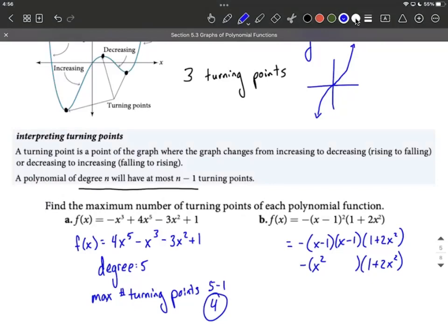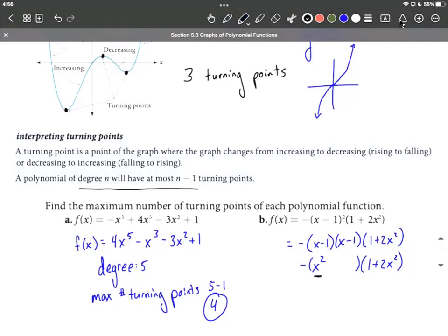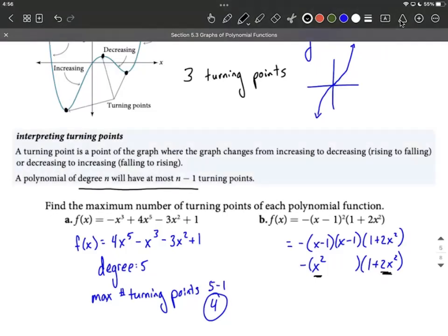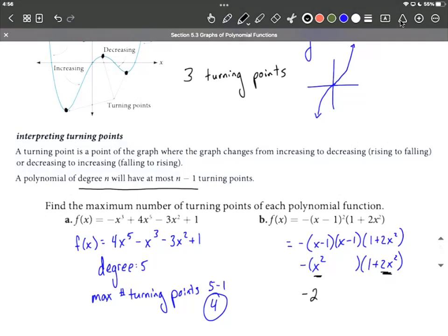Next, if we take the highest power of x in this first set of parentheses and multiply by the highest power of x in that second set of parentheses, we're going to end up with, technically a negative from the outside, 2x^4 is our highest power, and there's a bunch of other stuff going on here. But what this tells us is this would be a degree 4 polynomial, and our maximum number of turning points would be 4 - 1 = 3.